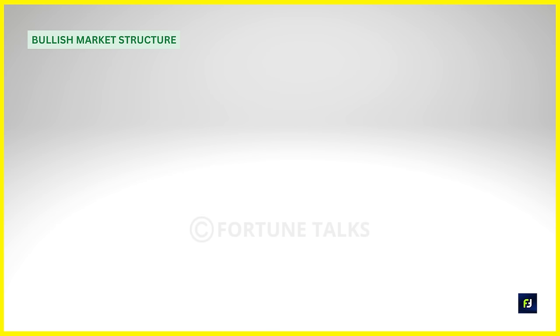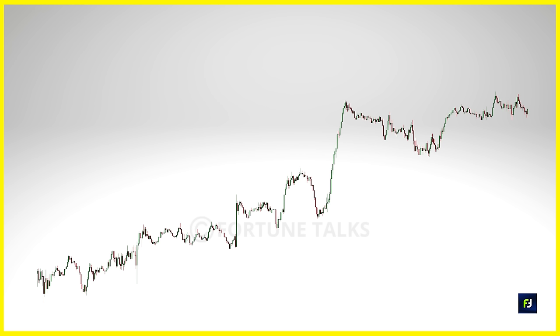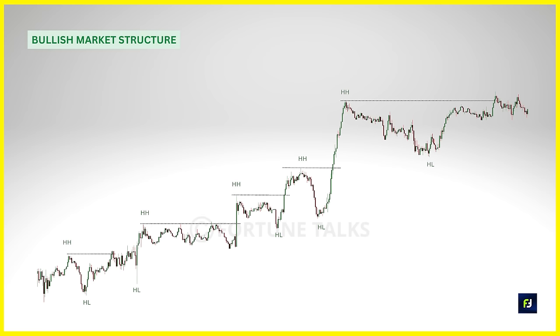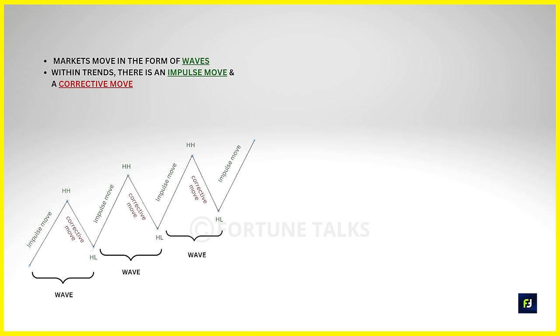So my request is that you strengthen your basics first. Now, market structure will not always be easy to identify — sometimes it can be confusing and complicated. Take a look at this chart: at a single glance, can you determine the overall market structure? Most of you would not be able to. This is actually a bullish market structure. The reason you cannot identify it is that your eyes are not trained to look for specific details. You may have learned that market moves in the form of waves, with impulse moves and corrective moves.